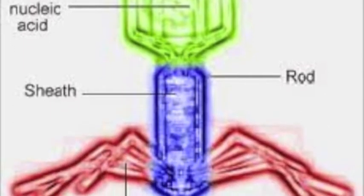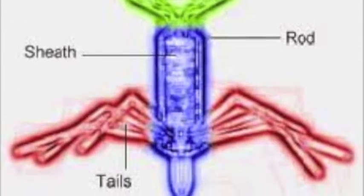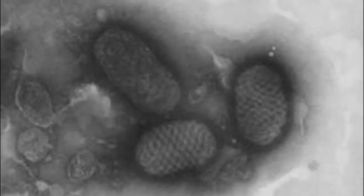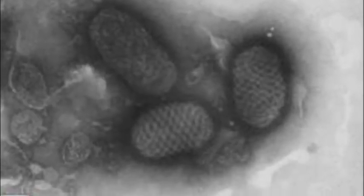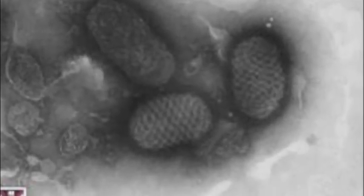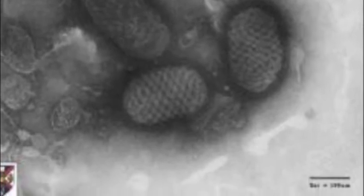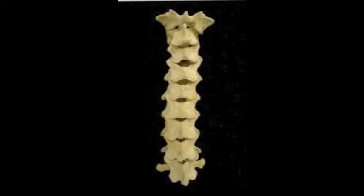Smallpox is a virus of a family of viruses known as poxviruses. More specifically, smallpox is part of a family of poxviruses known as orthopox. There are many types of poxviruses which infect all different types of animals. There are two principal types of poxviruses: poxes of vertebrates and poxes of insects.